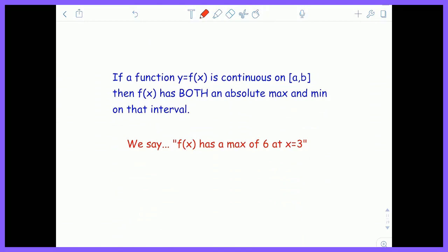Here's an important piece for you. If a function is continuous on a closed interval, a to b, then f(x) has both an absolute max and an absolute minimum on that interval. So if it's continuous and the interval is closed, you have to have a high point, you have to have a low point.